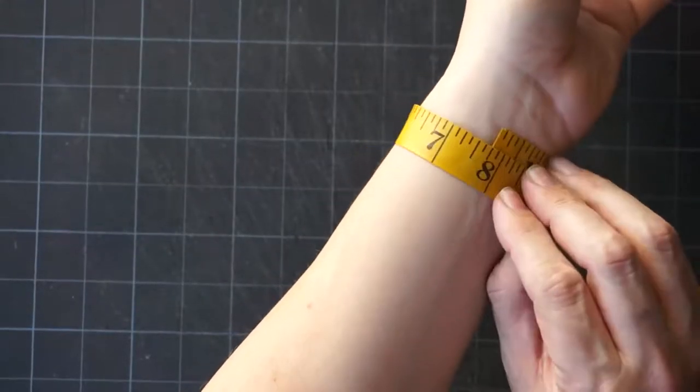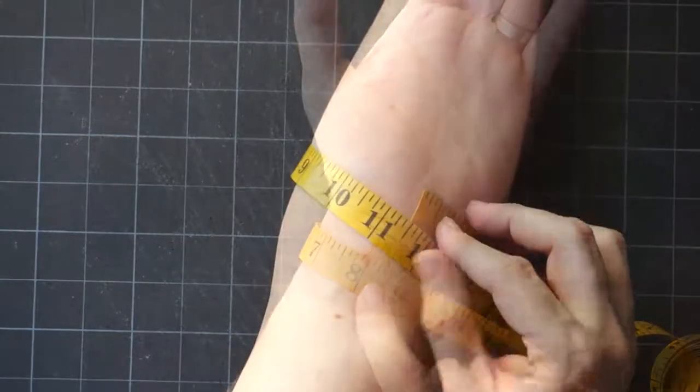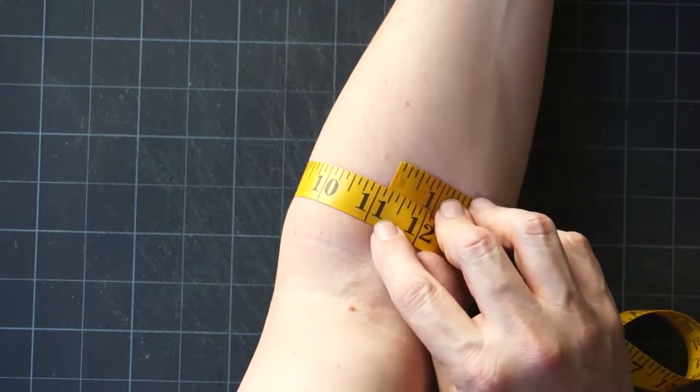Start by measuring your wrist. Mine was 8 inches. Then measure the top of your forearm. Mine came to 11 inches.